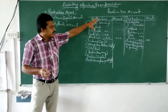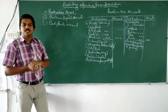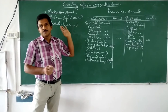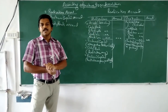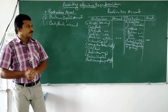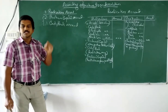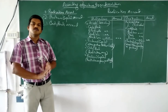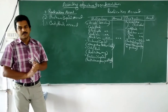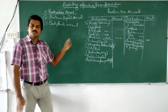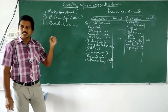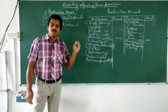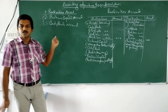Summary of journal entries in realization account: transfer assets — debit realization account, credit each asset; transfer liabilities — debit each liability, credit realization account; on selling assets — debit cash account, credit realization; on paying liabilities — debit realization, credit cash; asset taken by partner — debit partner's capital, credit realization; liability taken by partner — debit realization, credit partner's capital; realization expense paid directly — debit realization, credit cash; compensation to partner doing realization work — debit realization, credit that partner's capital.